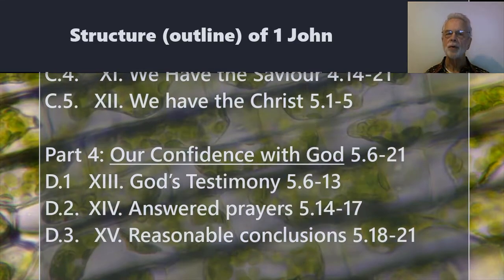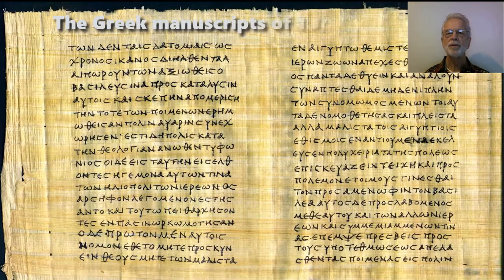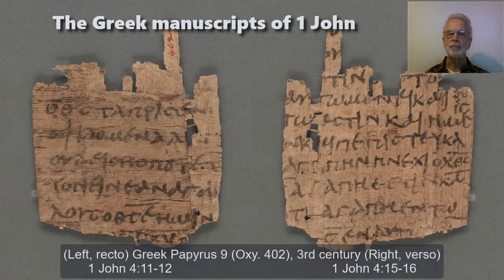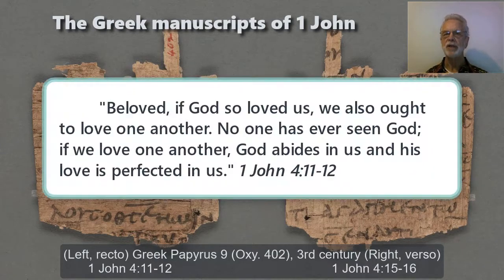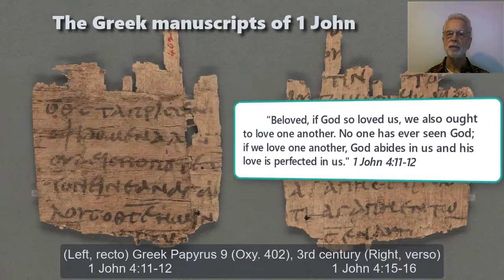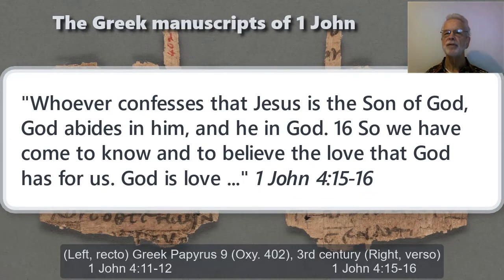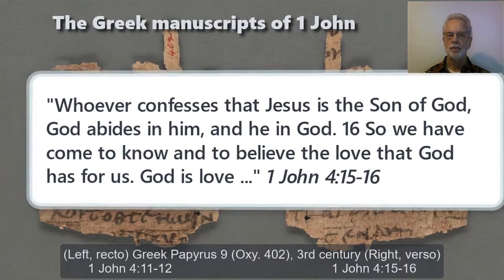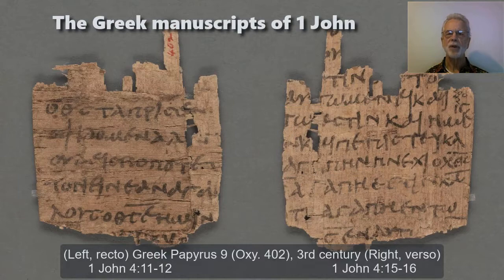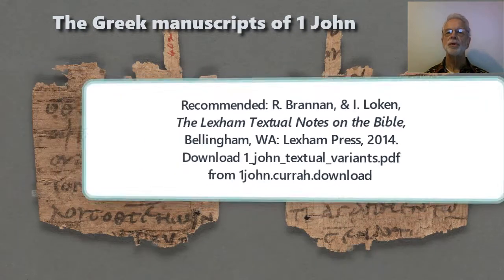Please download our outline of 1 John from the download site. Bible translators translate 1 John from ancient Greek manuscripts — that is, handwritten copies. The oldest Greek manuscript of 1 John, called Papyrus 9, dates from the 3rd century. Two manuscripts date from the 4th century, three others from the 5th century, and 23 more date from the 7th century and later. Through the centuries, scribes and copyists sometimes tried to make slight improvements. To obtain a list of these textual variants, go to the download site.